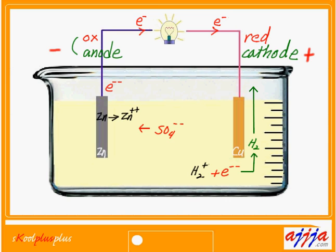What about inside? Inside, electrons cannot move. So only these anions keep moving towards — which is sulfate.